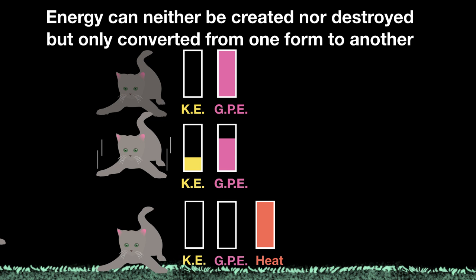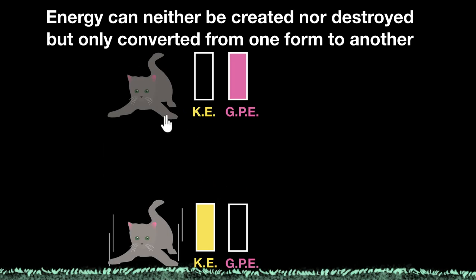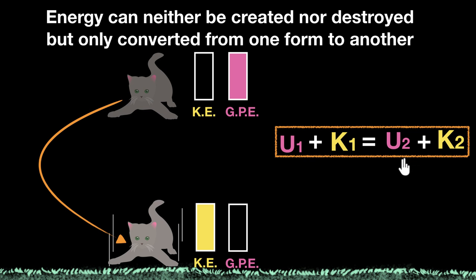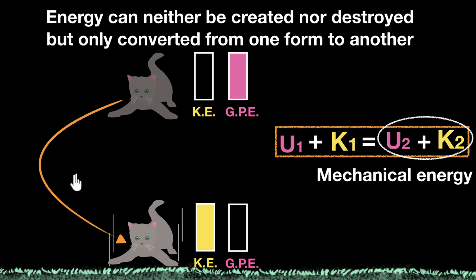To summarize: when objects are under the influence of gravity, their kinetic energy plus potential energy always stays the same — that total value never changes. This doesn't depend on what path it takes, whether straight down, a curvy path, or going up — it doesn't matter. The total energy will stay the same, and this total energy is called the mechanical energy. However, if other forces start acting, like when the cat hits the ground, the mechanical energy might get converted to other forms like heat or chemical energy. Whatever happens, the total energy can neither be created nor destroyed — it can only be converted from one form to another.